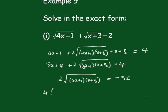We get 4 times, now removing these brackets, we get 4x squared plus 13x plus 3 equals 25x squared.